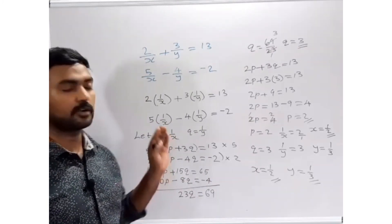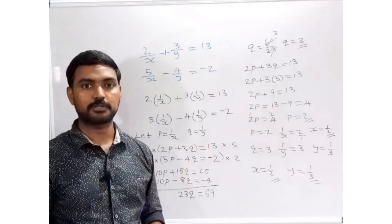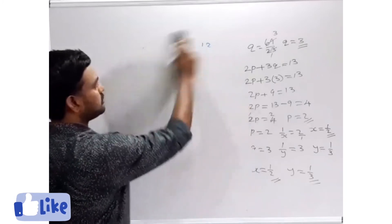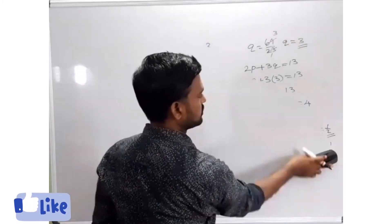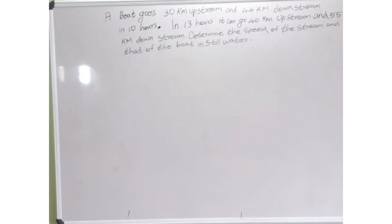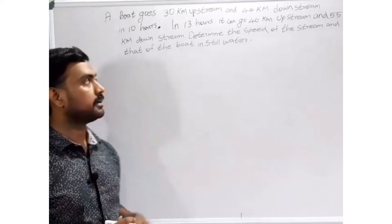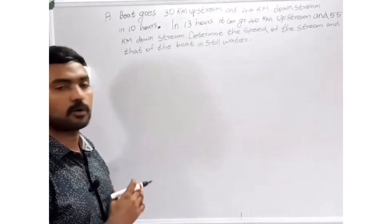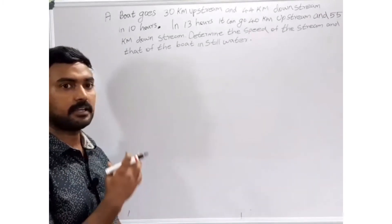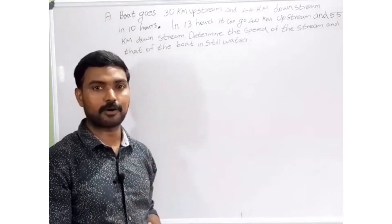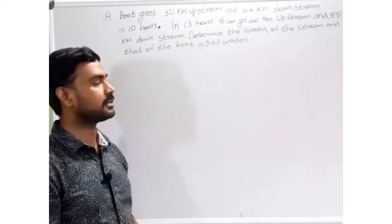Now we are going to select another example. We can read the question: a boat goes 30 km upstream and 44 km downstream in 10 hours. In 13 hours it can go 40 km upstream and 55 km downstream. Determine the speed of the stream and that of the boat in still water.